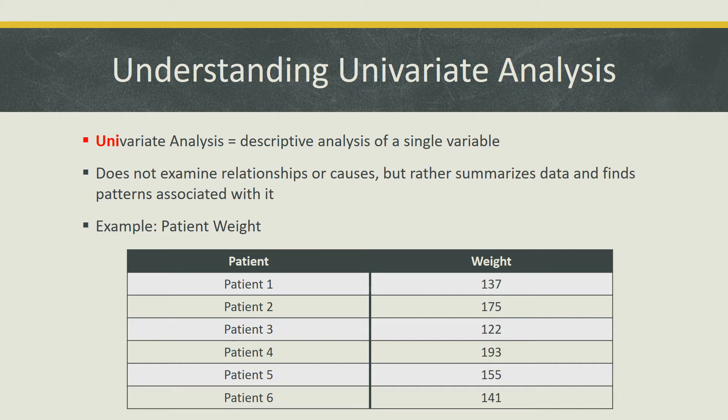In the table below, we examine univariate data pertaining to patient weight. Weight would be the variable of interest, and we can determine patterns associated with this variable by summarizing the data. If we were dealing with bivariate data, you would see another variable come into play, such as age. Therefore, the inclusion of only one variable would call for univariate analysis.